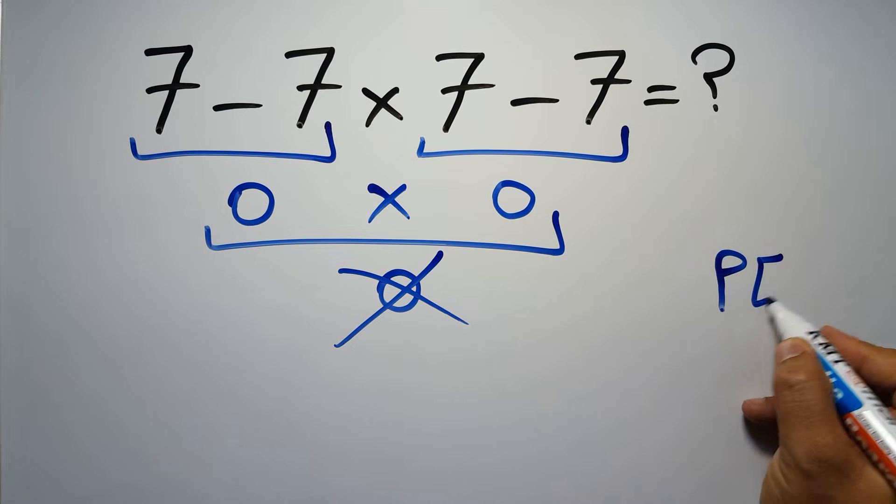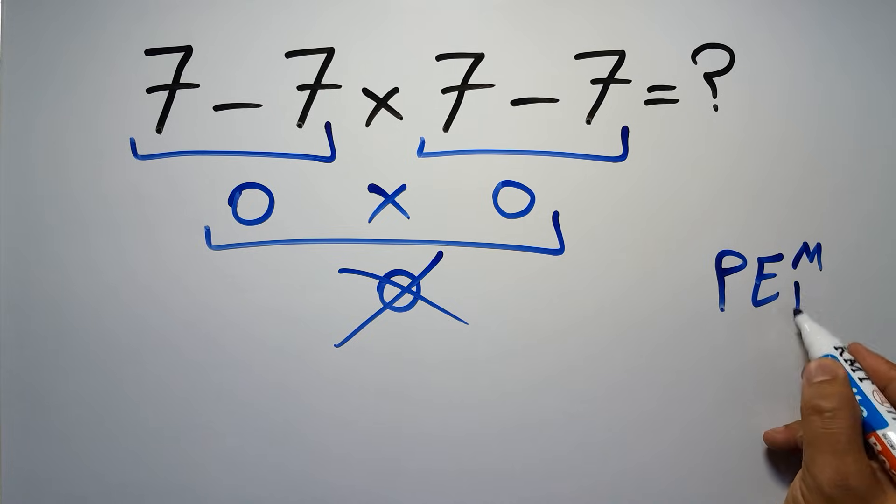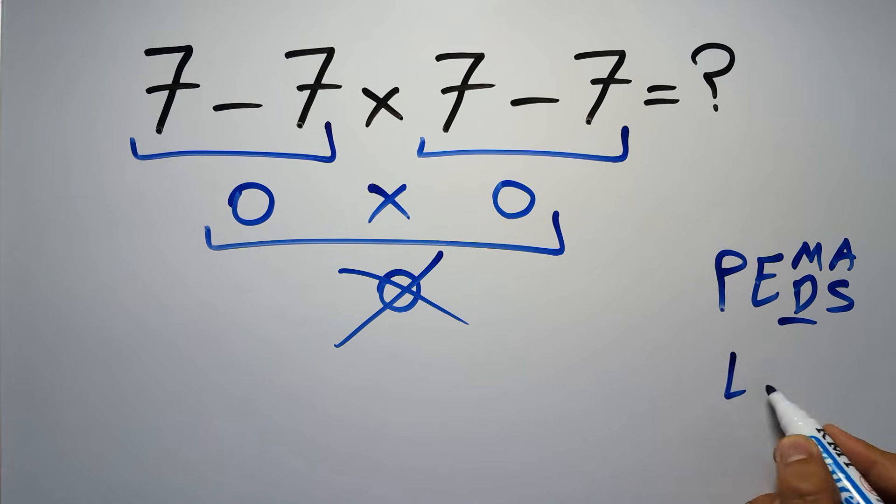Remember that multiplication and division have equal priority, and we have to work from left to right. And the same applies to addition and subtraction.